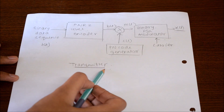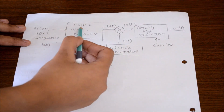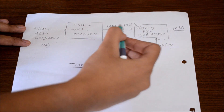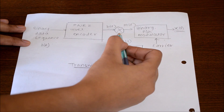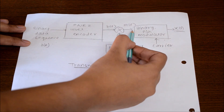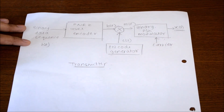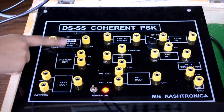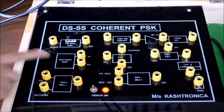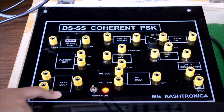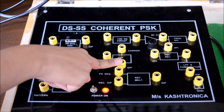This is the transmitter block diagram of the DSS system. Binary data sequence B(K) is given to the PNRZ level encoder. We get the B(T) signal, then the PN code generator signal is also given to the multiplier, and we get M(T) signal. Further, it is given to the binary PSK modulator with the carrier and we get the modulated signal X(T). This is the PN sequence generator, the PNRZ level encoder which is a bit pattern, the transmitter multiplier, and the PSK modulator with carrier where we get the output modulated signal.